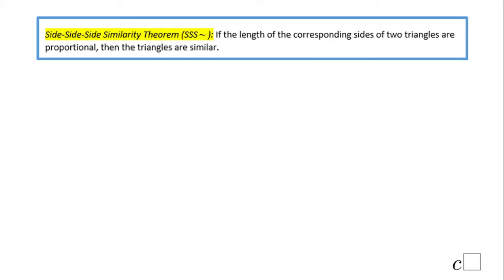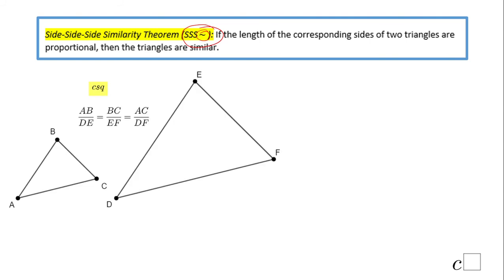The second method to prove two triangles are similar is called Side-Side-Side similarity — SSS for short. You notice the corresponding sides of the two triangles are proportional. You're going to get some numbers, and if you see they are in the same proportion, then the triangles are similar.